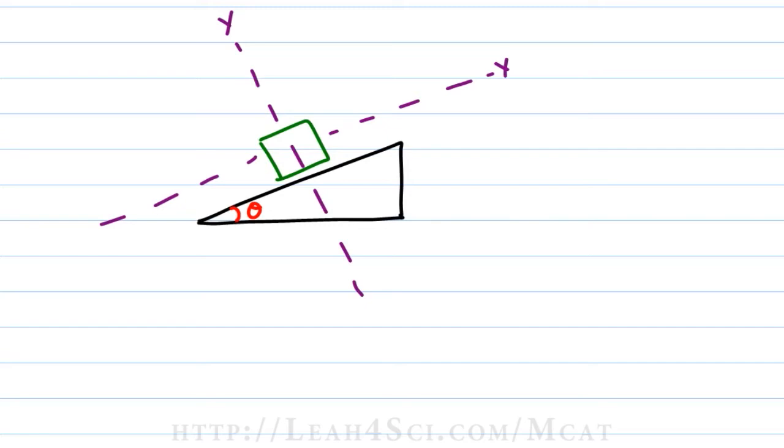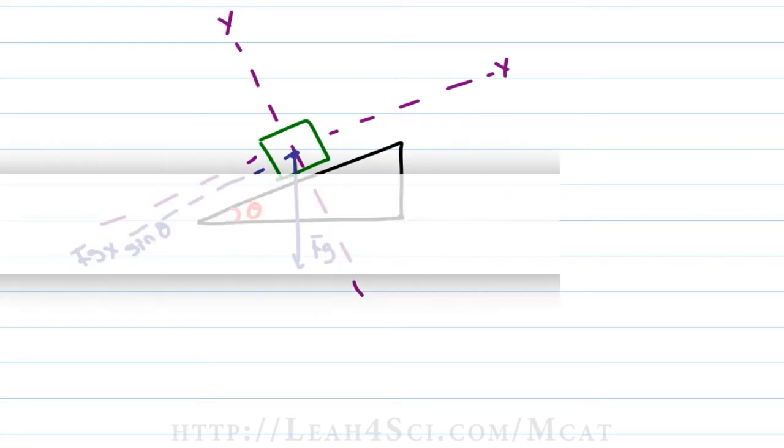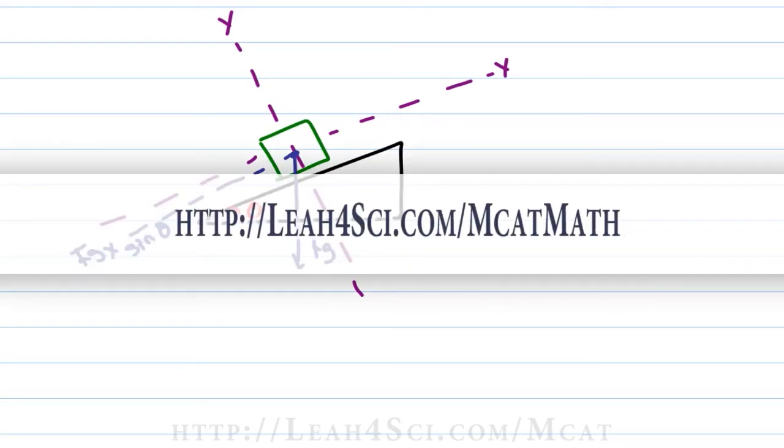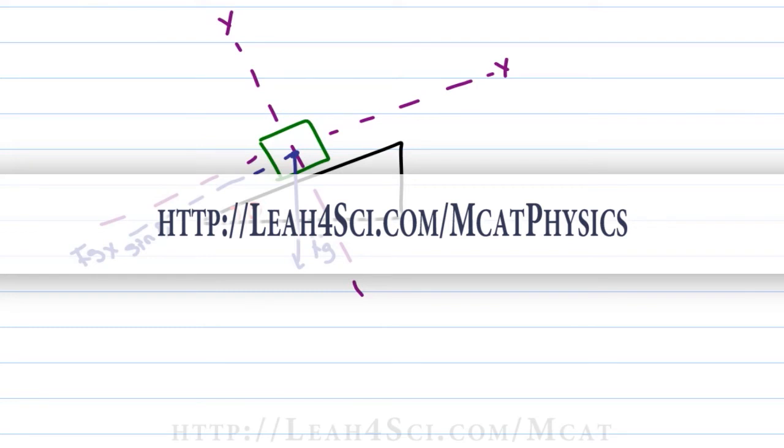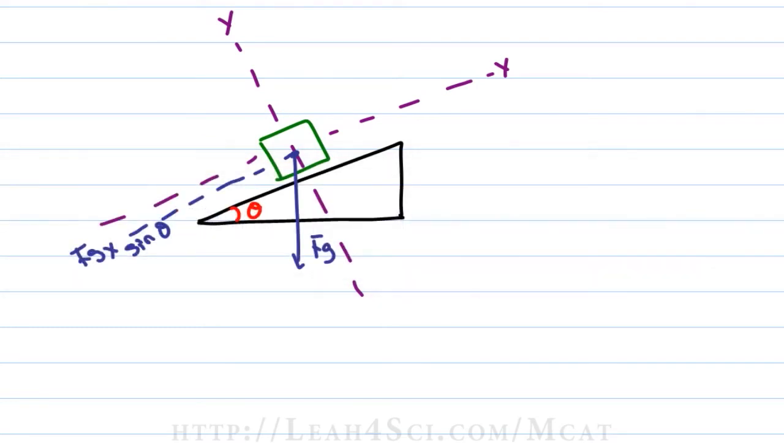If we set up a free body diagram then the downward force is the force of gravity which is in between the x and y components so we'll break it up where the force of gravity in the x direction is force of gravity sine theta. If you're not comfortable with why I chose sine go back to my trigonometry video on my website at leah4sci.com/mcat math and then take a look at the inclined planes video in the kinematics series leah4sci.com/physics.